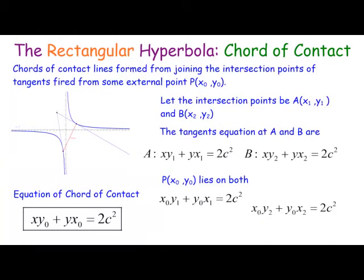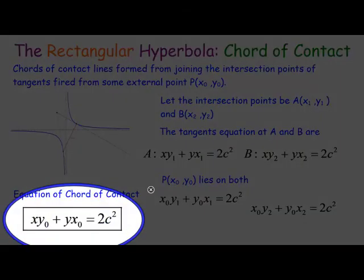The chord of contact is done similarly to previous chords of contact. Points A(x₁, y₁) and B(x₂, y₂) lie on the tangent equations, and external point P(x₀, y₀) lies on both tangents. Therefore the equation of the chord of contact is xy₀ plus yx₀ equals 2c squared.